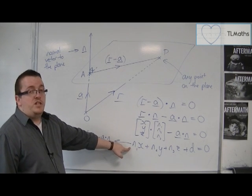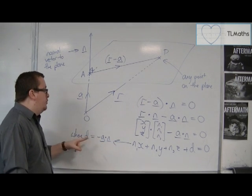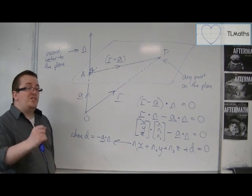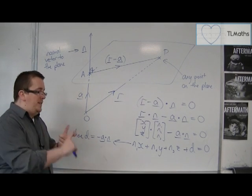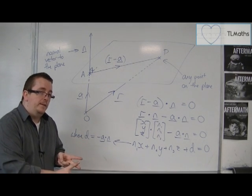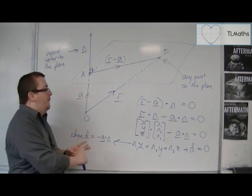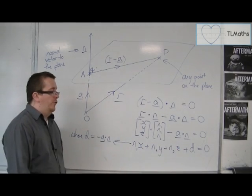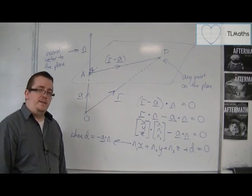This is given to you in the formula booklet. It also tells you how to find D. So as long as you know a point that's on the plane and a normal vector to the plane, then you can find the equation in this format. And we're going to see an example of that in the next video.